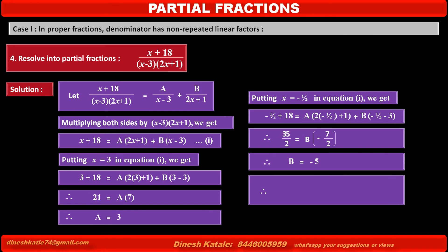Therefore the given fraction (x + 18) / ((x - 3)(2x + 1)) equals 3/(x - 3) + (-5)/(2x + 1). For better understanding, take a pause here and try to solve this problem again in your notebook without copying.